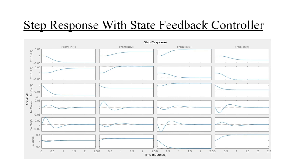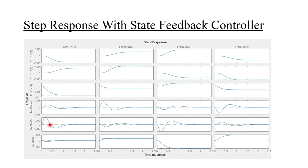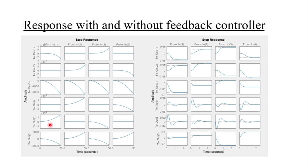With the state feedback controller, all responses settle down — for a bounded input we get a bounded output, so according to BIBO stability criteria the system is stable. Comparing responses with and without the feedback controller: without feedback, responses do not settle, making the system unstable; with feedback, the system is stable and the settling time and damping ratio can be chosen according to our design requirements.